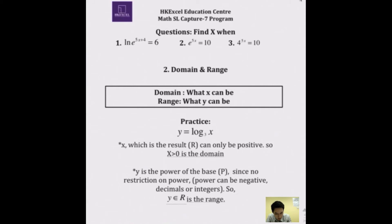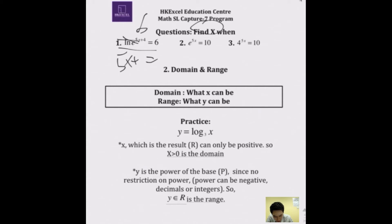Now let's look at some IB exam questions. Question 1: LN of e to the power 5X plus 4 equals 6. Find X. LN is log to the base e, same base — cross it out. Only the power is left: 5X plus 4 equals 6. So 6 minus 4 is 2, then divide by 5: X equals 2 over 5.